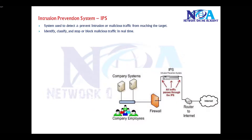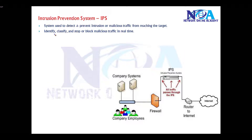An intrusion prevention system is a hardware or software system that detects different types of intrusions or malicious traffic in the network, and then stops it before it reaches the target. The main job of the IPS is to identify and classify different types of malicious traffic, and if possible, stop or block that malicious traffic in real-time.